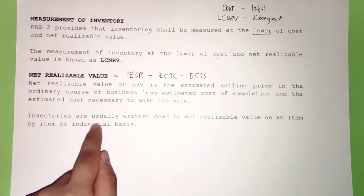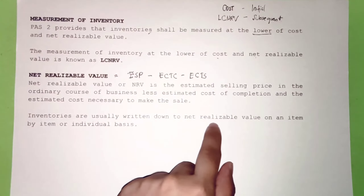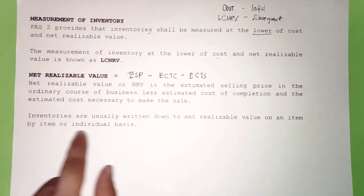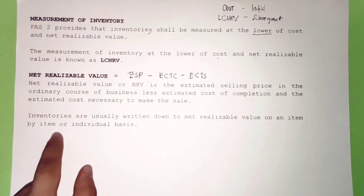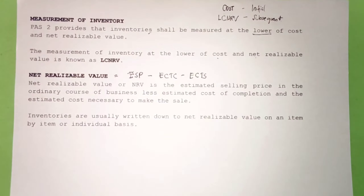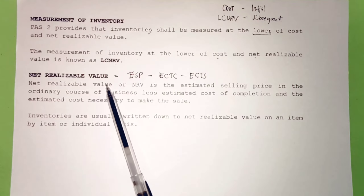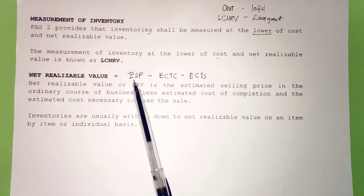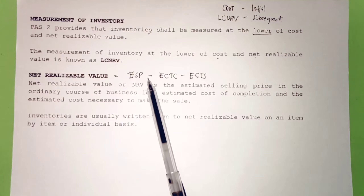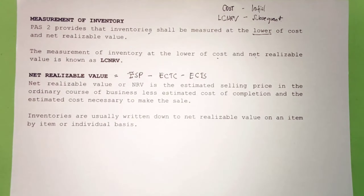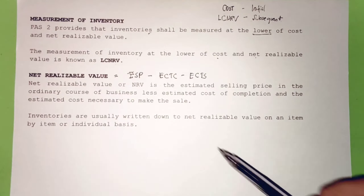Inventories are usually written down to net realizable value on an item-by-item or individual basis. NRV = Estimated Selling Price − Estimated Cost to Complete − Estimated Cost to Sell.